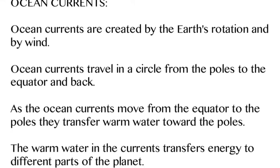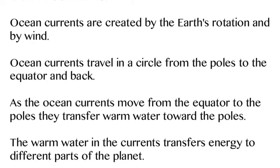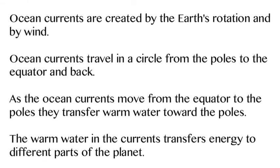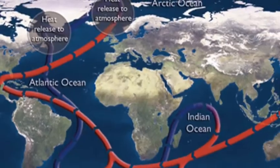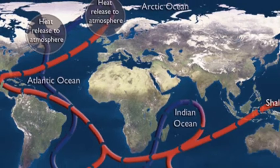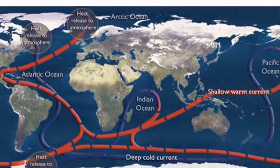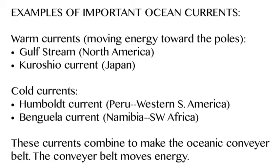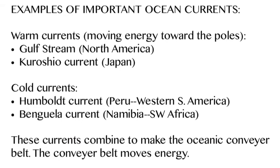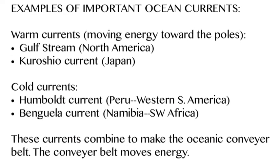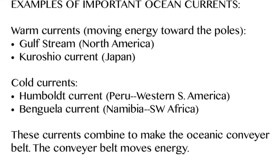Speaking of ocean, let's talk about ocean currents — this is how water is moved around the Earth. They're created by the spin of the Earth and by wind. Ocean currents basically take energy from the equator to the poles and then it comes back. Warm currents moving from the equator to the poles include the Gulf Stream and the Kuroshio Current.